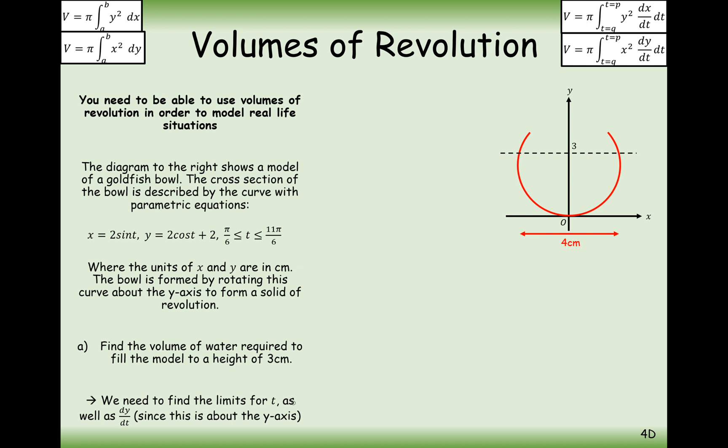We need to find the limits for t as well as finding dy/dt. Those are the two first things we'll do before we get stuck into the integration. Finding the limits first, we need to find the limits 0 and 3. When it's 0, let's set y equal to 0 and then take away the 2 onto the other side and divide by 2. Then t will equal π when cos t equals minus 1. The limit for t is π, and is that in between the range? Yeah, that's in between the domain π/6 to 11π/6. When y equals 3, set y equal to 3, take away the 2, divide by 2. In this case, you get cos equals 1/2, which will happen at t equals π/3, which again is inside the domain, but also is 5π/3 as well.